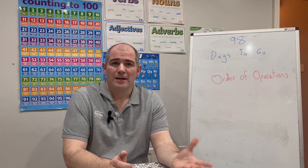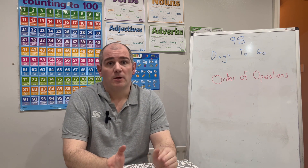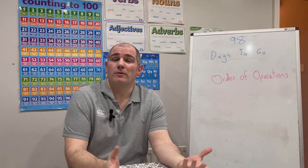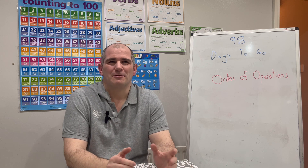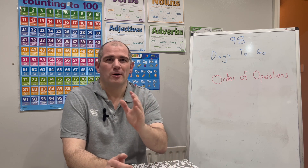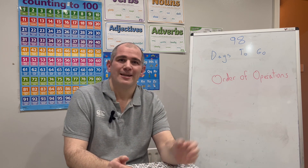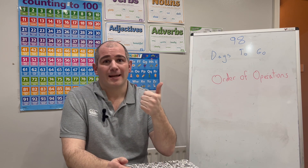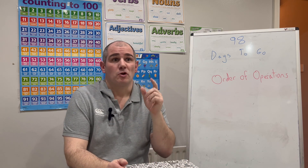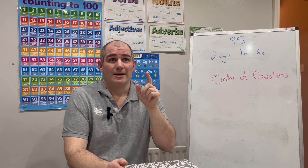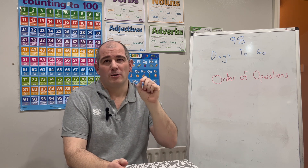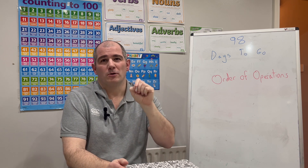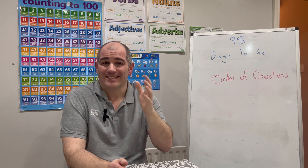Some people know it as BODMAS or BIDMAS, but I like to call it order of operations. So you've got your brackets, then you've got your orders or your indices — like your powers, your squares, your cubes, your square roots and things like that.